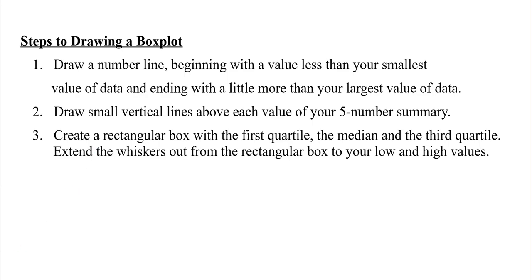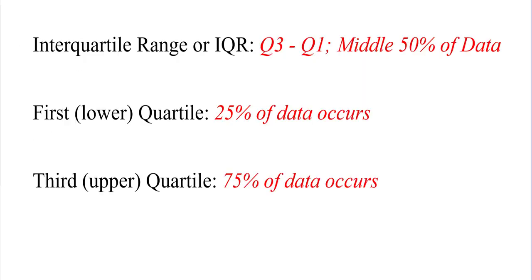We also have what we call the interquartile range, or IQR, and this is simply taking Q3 minus the Q1 value. This is where the middle 50% of the data occurs. Our first or lower quartile is where 25% of the data occurs, and then our third or upper quartile is where 75% of the data occurs.